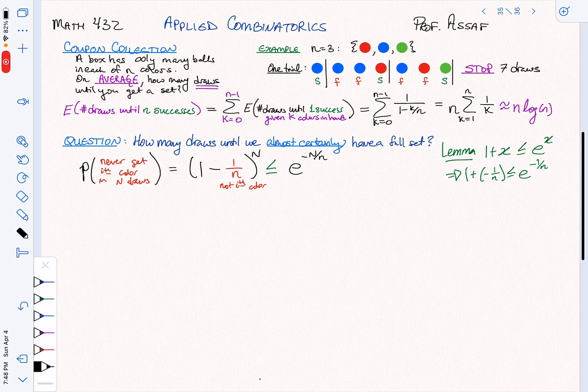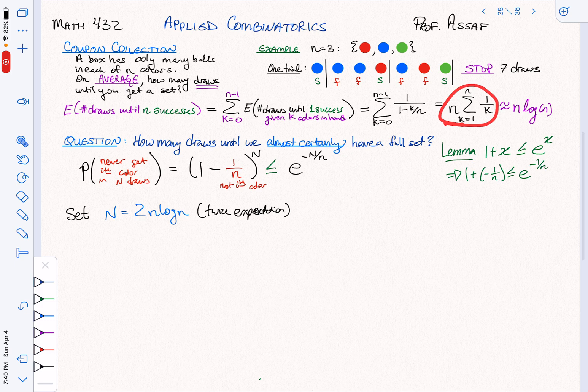Just like when you do a delta-epsilon proof, the first time you work it through you're guessing at things, and the next time you already know what the answer is, so you know what to pick for your delta. I'm going to do the same thing here. Let capital N, the number of draws, equal twice the expectation. Remember that on average it should take me five and a half draws. So suppose I take 11 draws. What's the probability that I'm going to succeed?